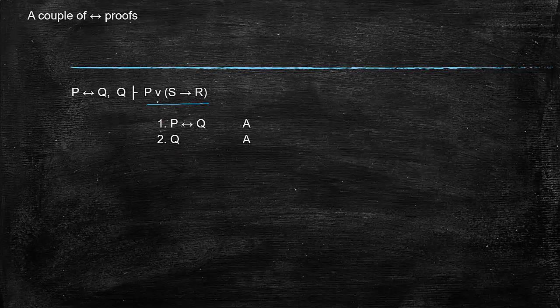Well, whenever you see that you're trying to prove a disjunction, you want to suspect that you're going to just prove one of these and just get the other one for free by or introduction. So you have P if and only if Q, you have Q, you want P or if S then R. Now here it looks to me like you could easily get P. Right? So how would you do that?